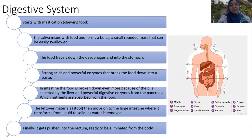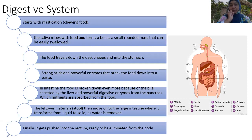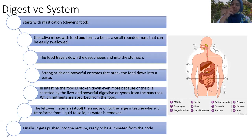The second system is the digestive system. It starts with mastication — chewing food in our mouth. We have teeth and other equipment in our mouth for chewing. Saliva mixes with the food to form a bolus — a small running mass that can be easily swallowed.